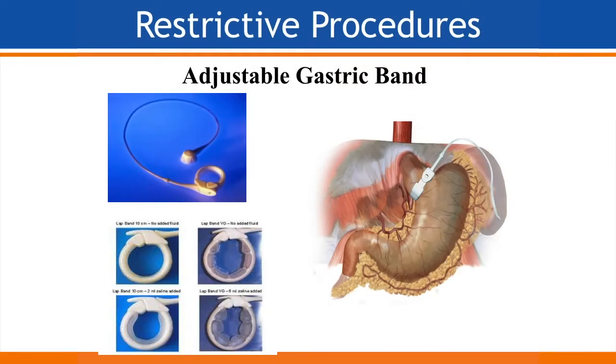The gastric bypass works very well for weight loss and for other medical problems. Adjustable gastric band, as the name suggests, is a silicone band placed on the upper portion of the stomach, attached with a tube to a port — you can make it bigger or smaller according to the patient's need. However, most surgeons have stopped doing this procedure because effectiveness is very low and there are a lot of complications.